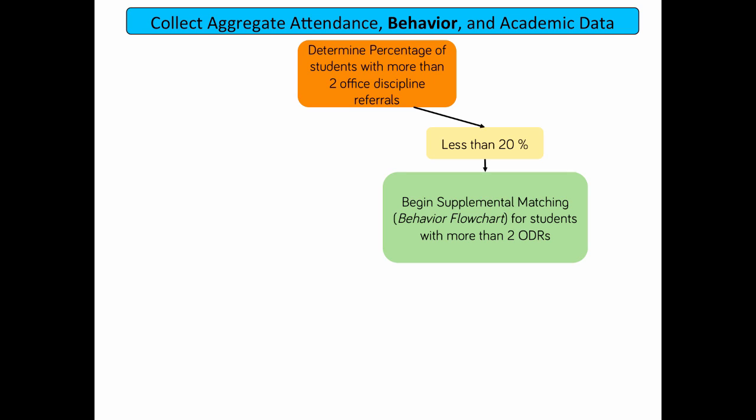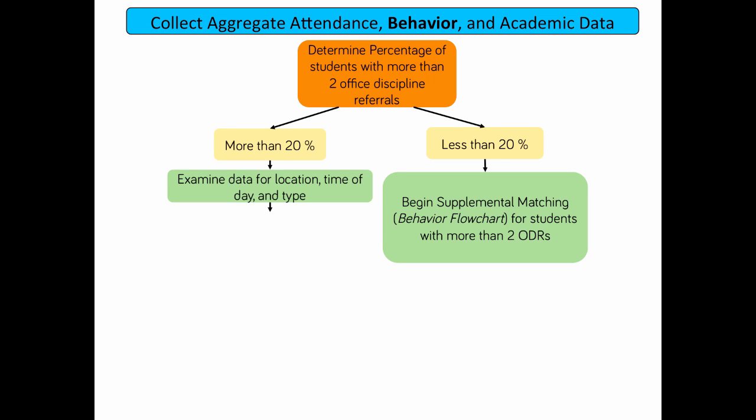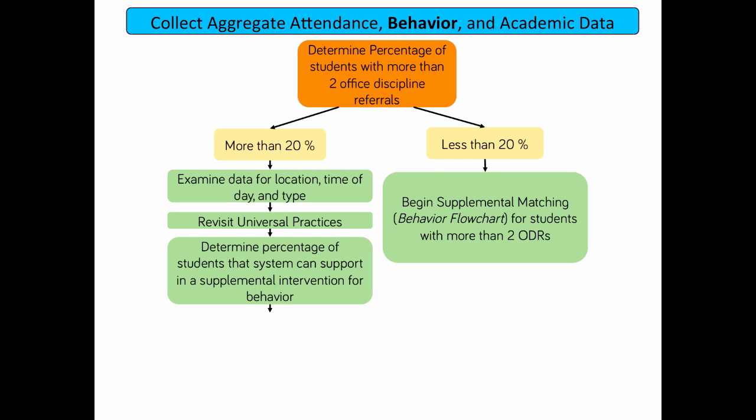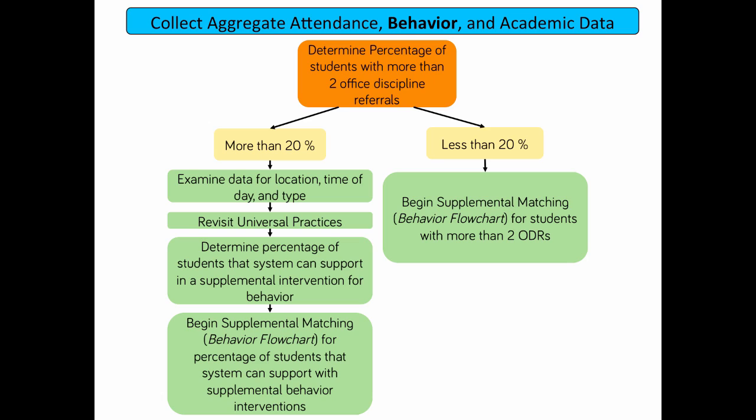If the percentage of students who have more than two office discipline referrals is greater than 20% for the grade or school, it is recommended to examine the data further for location, time of day, and type in order to revisit and refine universal practices. While adjusting the behavior support provided in core, the percentage of students a supplemental intervention system can support is determined, and that group is matched to predetermined supplemental interventions. In this scenario, the school will be intervening at the core level with core behavior strategies as well as supplemental interventions.